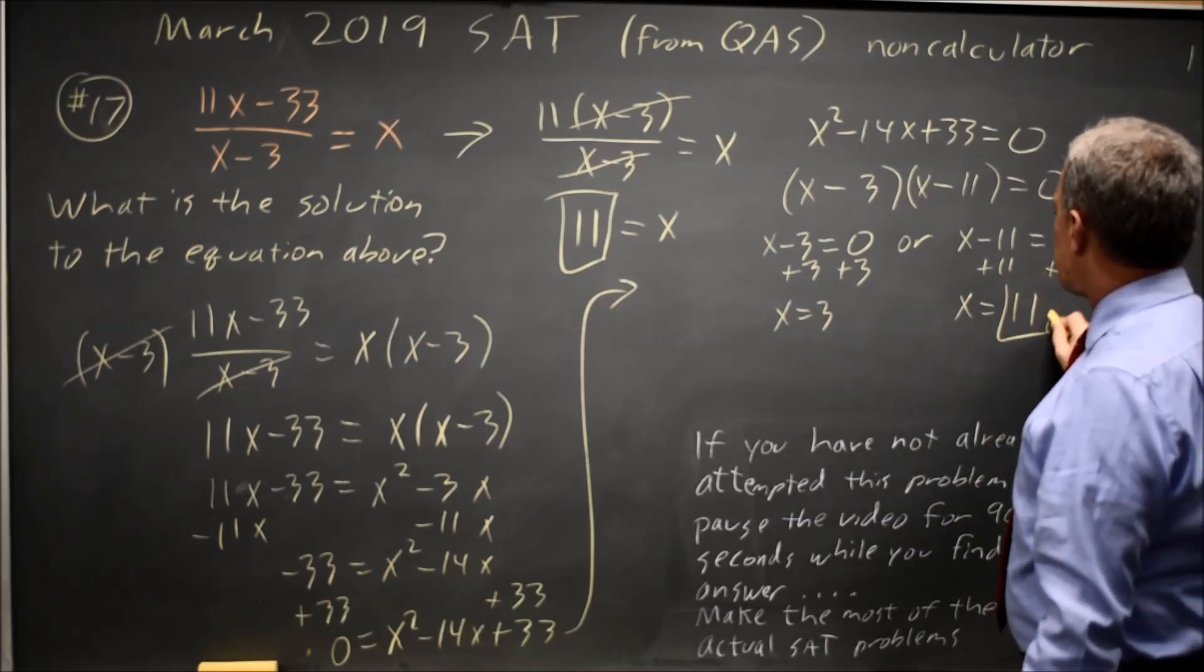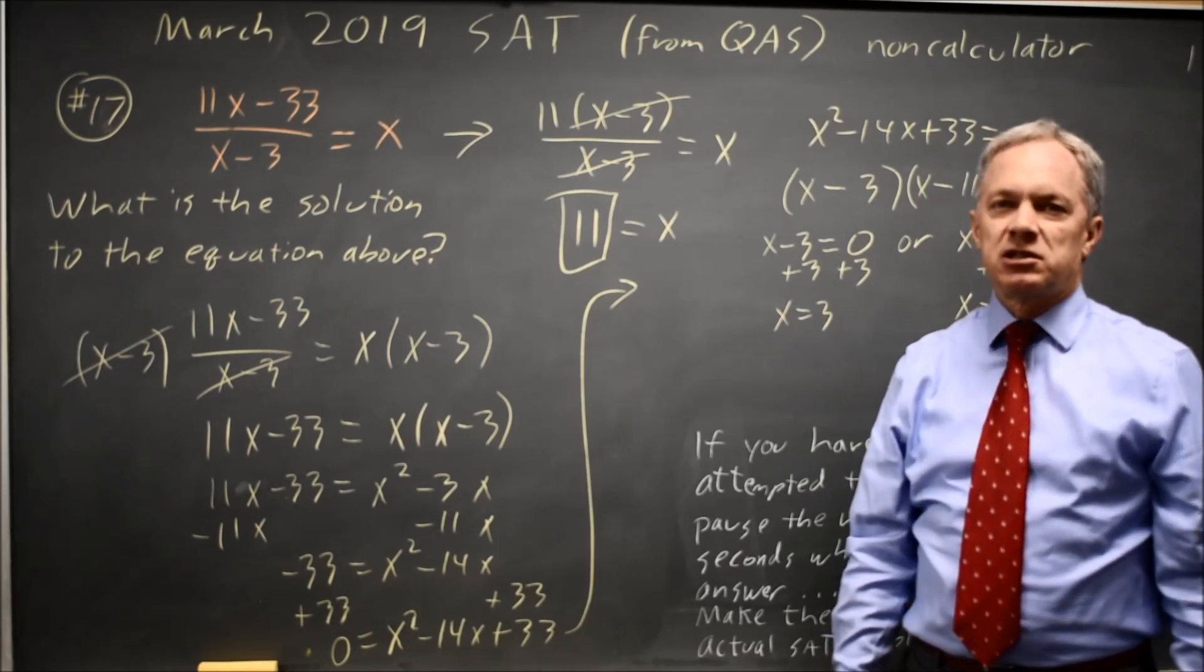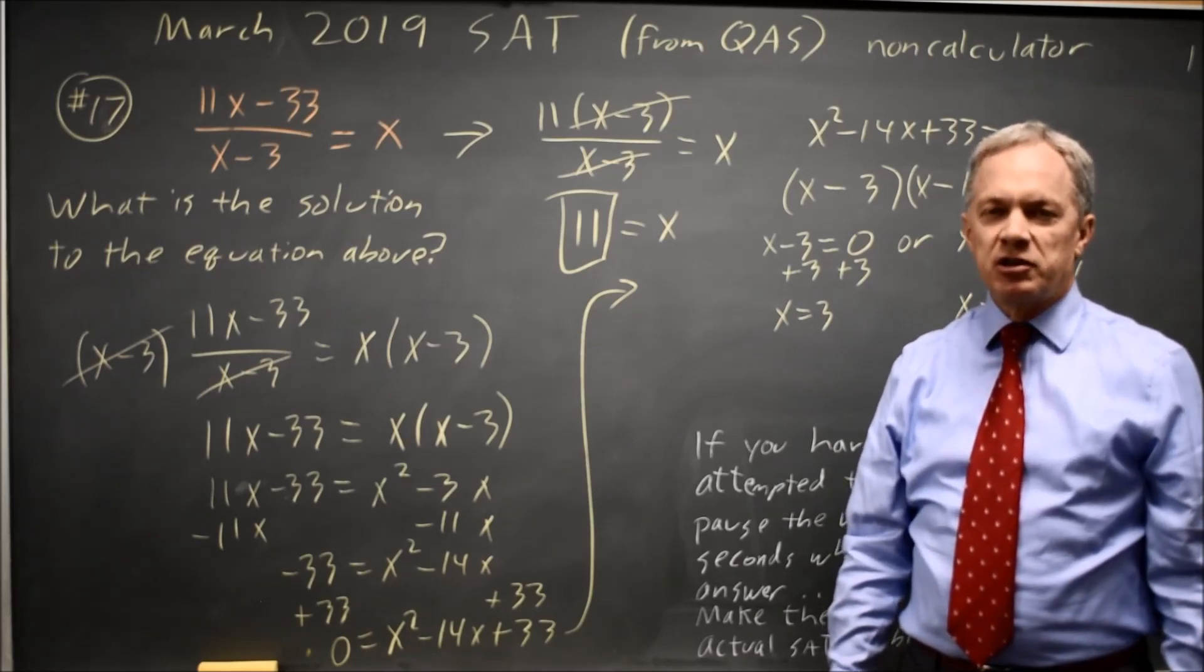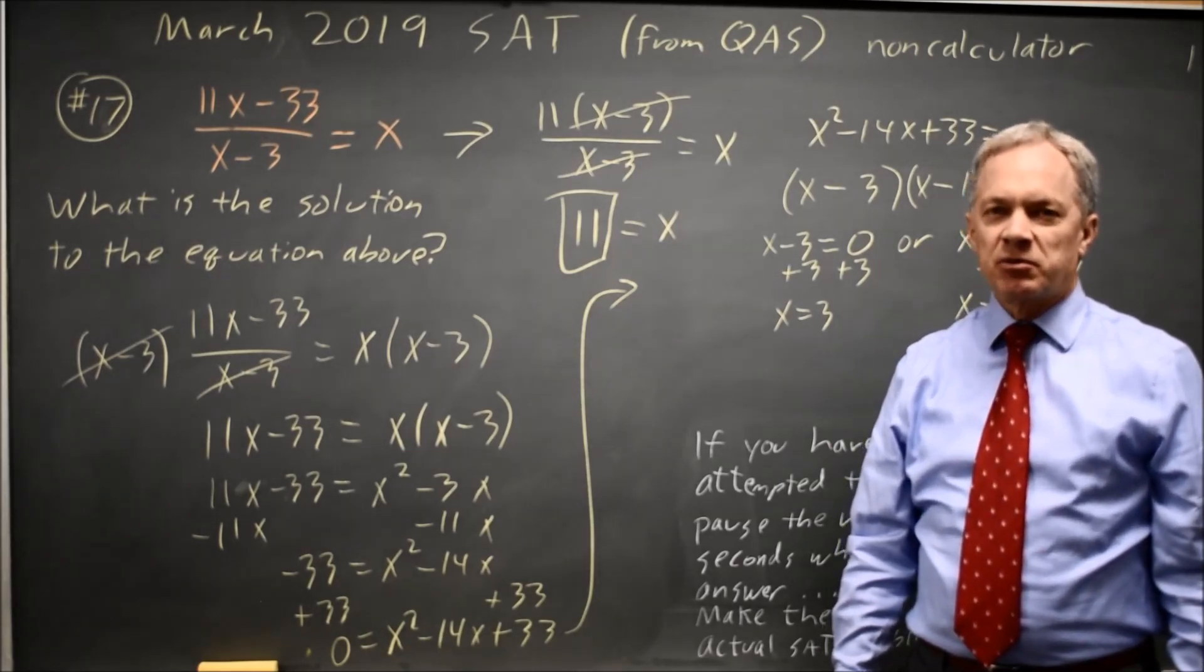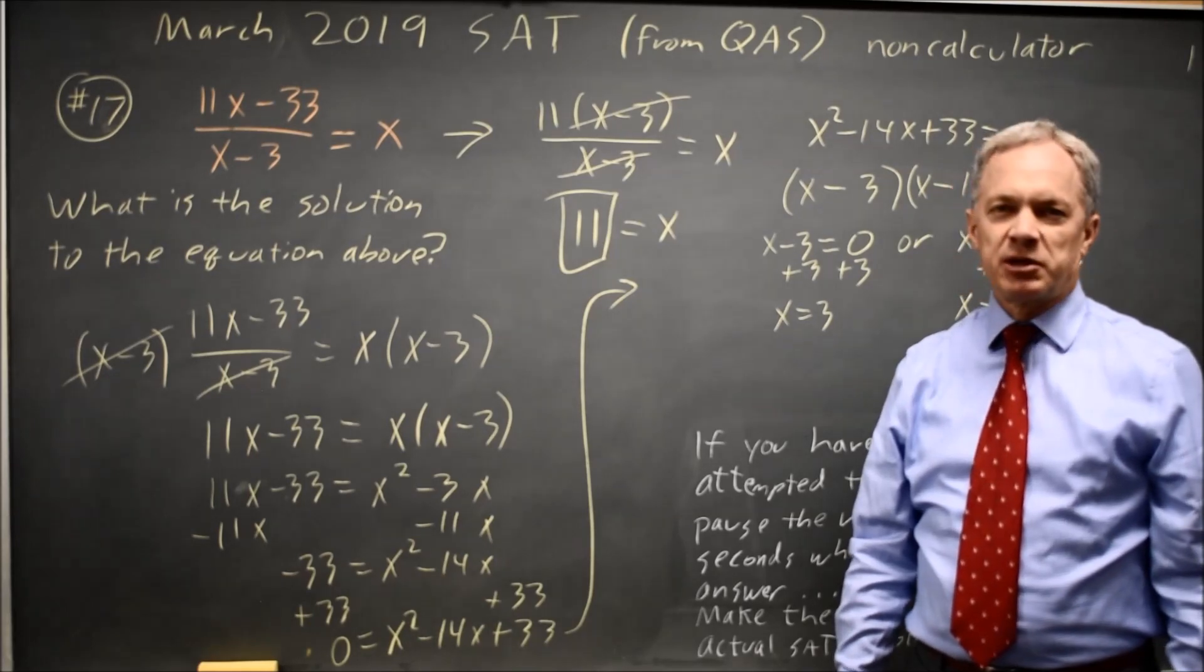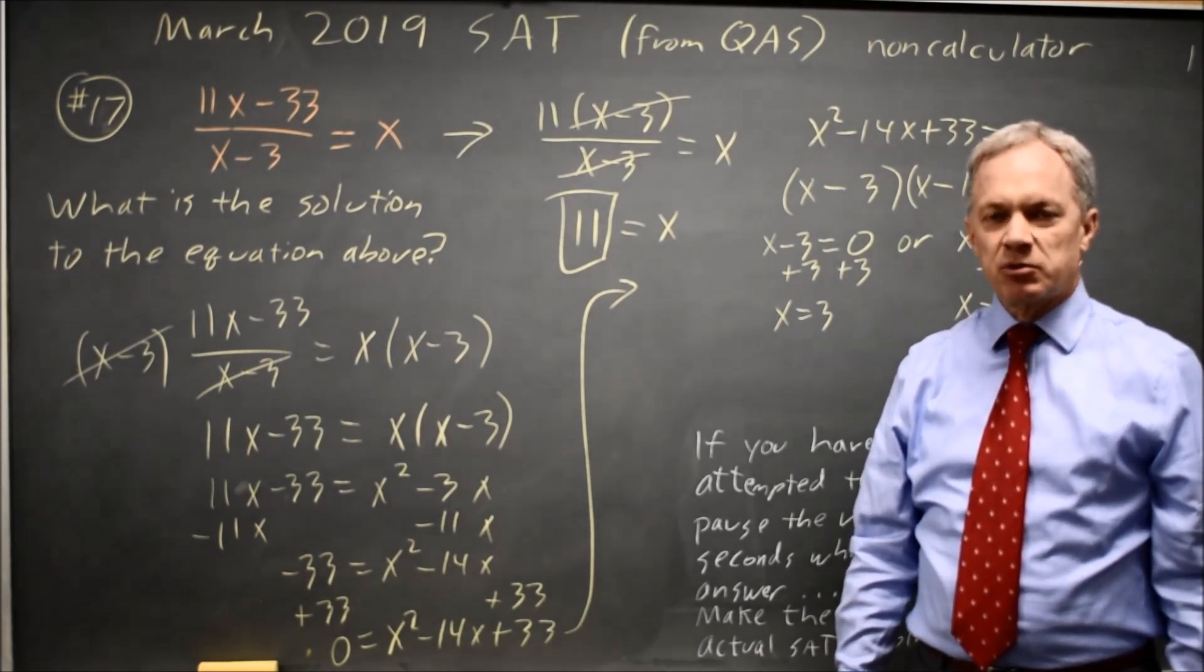And that would be my answer. It is much easier to solve this by factoring the numerator than it is by multiplying both sides by x minus 3, essentially cross-multiplying, but both methods work.